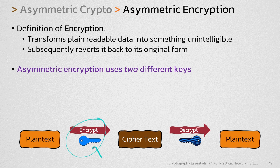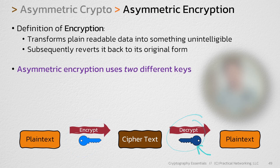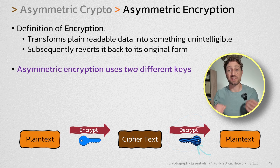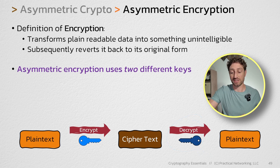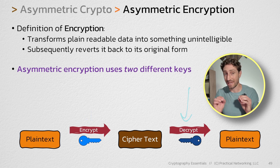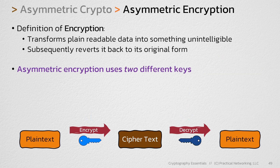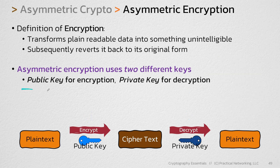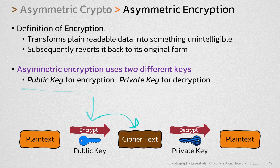One key will handle the encryption, and then another key will handle the decryption. With symmetric encryption, it was the same key that did the encryption and the decryption. With asymmetric encryption, it's two different values — the public key will be used to do the encryption, and the private key will be used to undo the encryption.